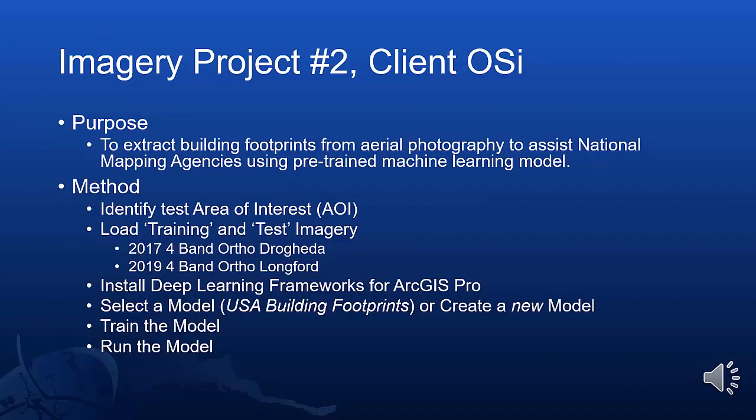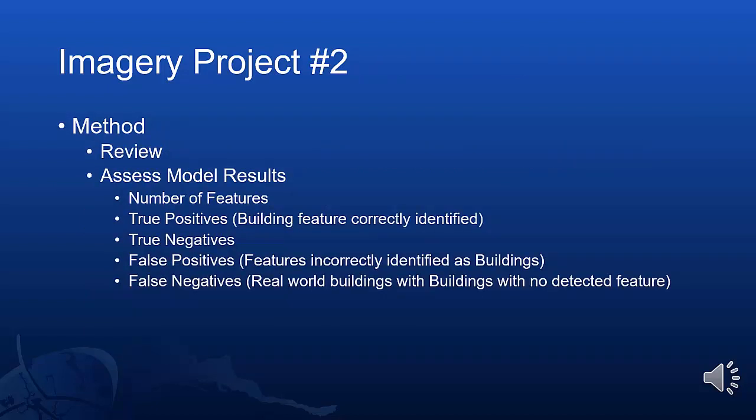The second project that I'm going to discuss was carried out for our client, the Ordnance Survey of Ireland. The purpose of the project was to assess the ability of pre-trained machine learning models to extract building footprints from aerial photography. The method required us to identify an area of interest — for this project we selected Drogheda for our training area and then tested using Longford. The process required us to install deep learning frameworks for ArcGIS Pro, and to download the USA Building Footprints model from the Living Atlas. We tested the model in a number of different scenarios, baselined using the standard model, then retrained using RGB and combinations of RGB and NIR, with frozen and unfrozen models, and then reviewed the results.